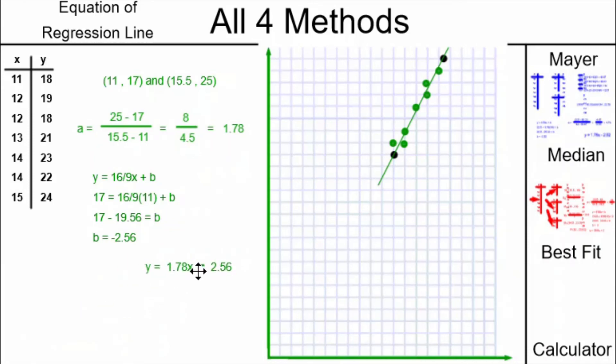All that's left now is to rearrange the slope and intercept that I found into the y equals ax plus b form. And we have our regression line equation.